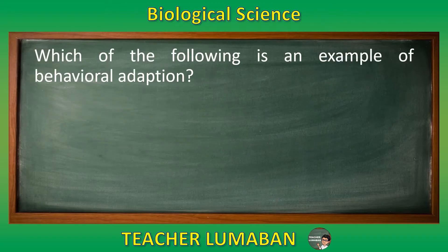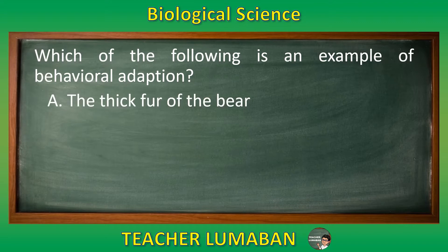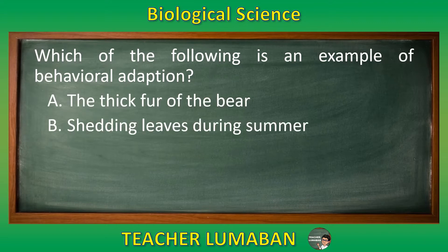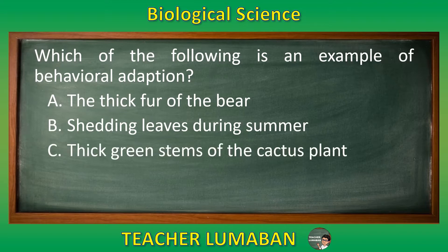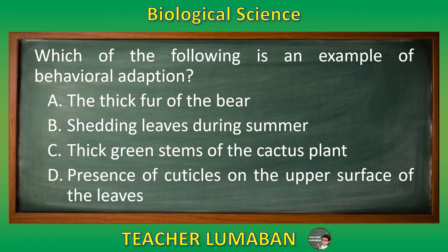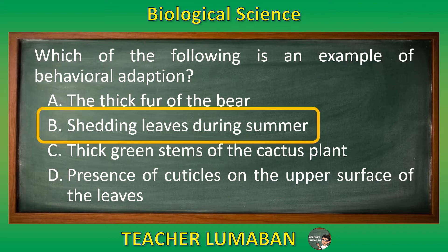Which of the following is an example of behavioral adaptation? Letter A: the thick fur of the bear. Letter B: shedding leaves during summer. Letter C: thick green stems of the cactus plant. Letter D: presence of cuticles on the upper surface of the leaves. The correct answer is letter B, shedding leaves during summer. Shedding leaves during summer is an example of behavioral adaptation.